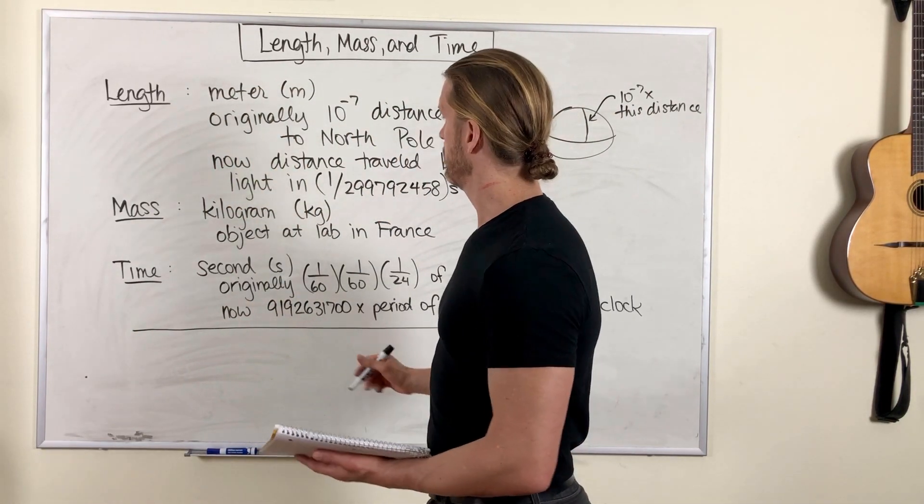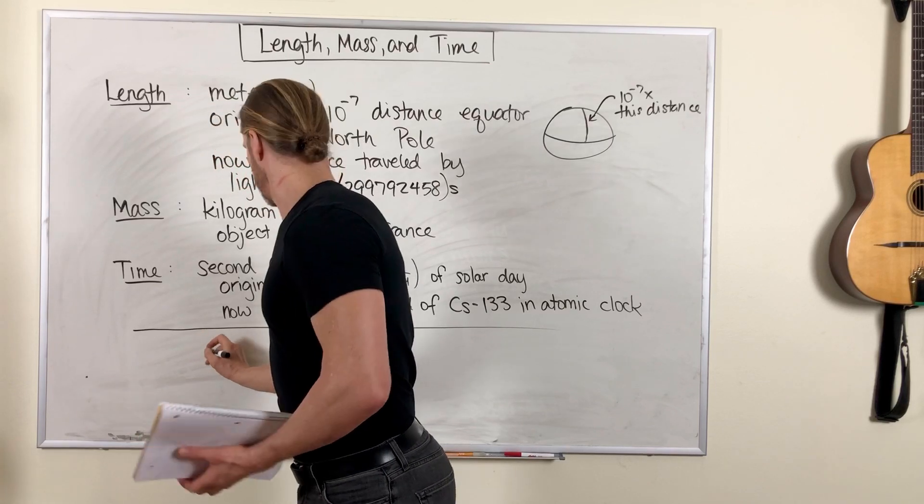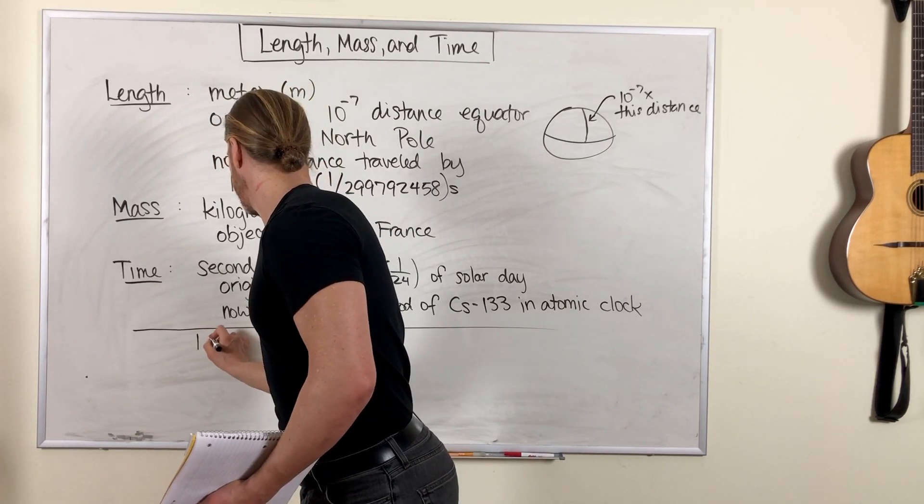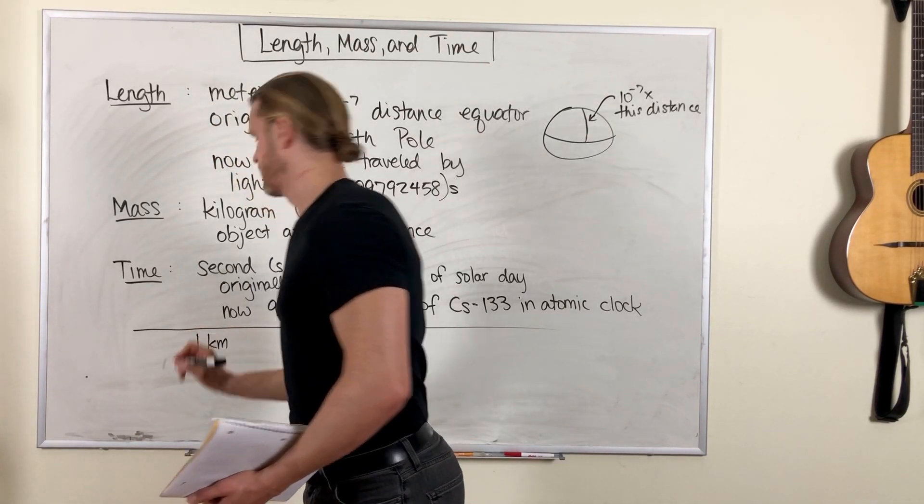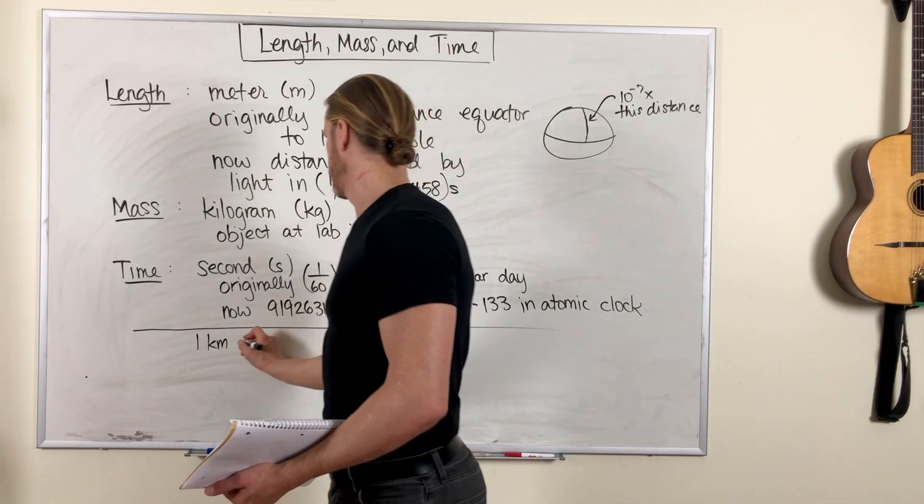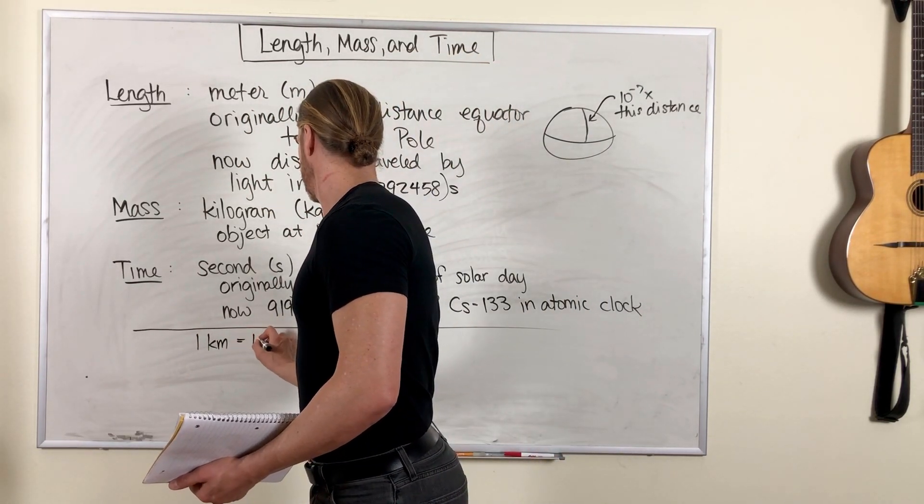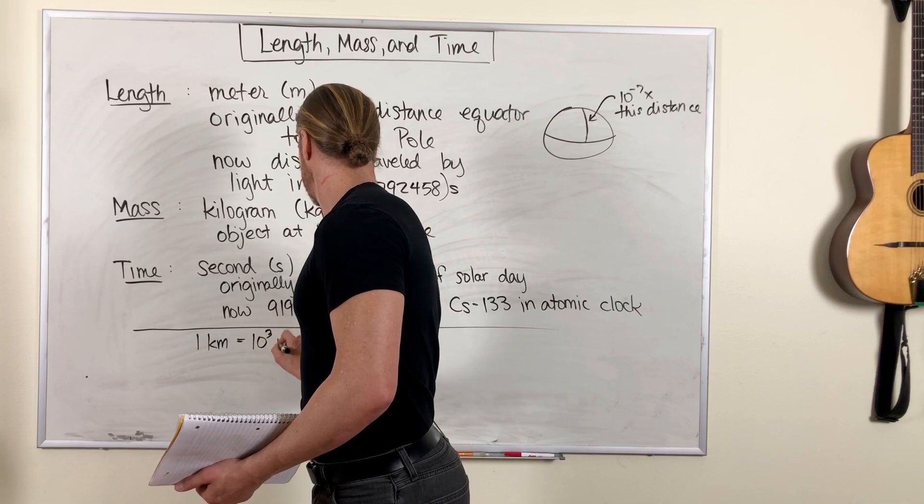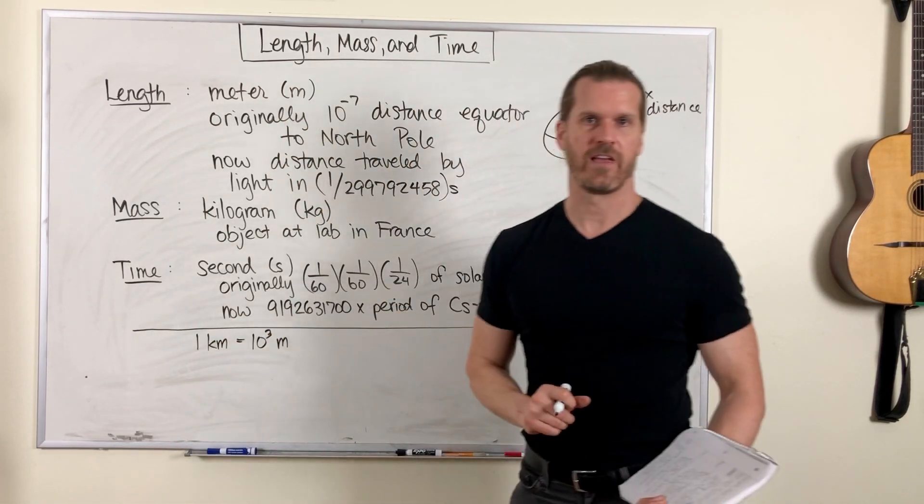You don't have to memorize them, but I'll just write a few of these down so you can see how they're used. For example, one kilometer is 1,000 meters, 10 to the third meters.